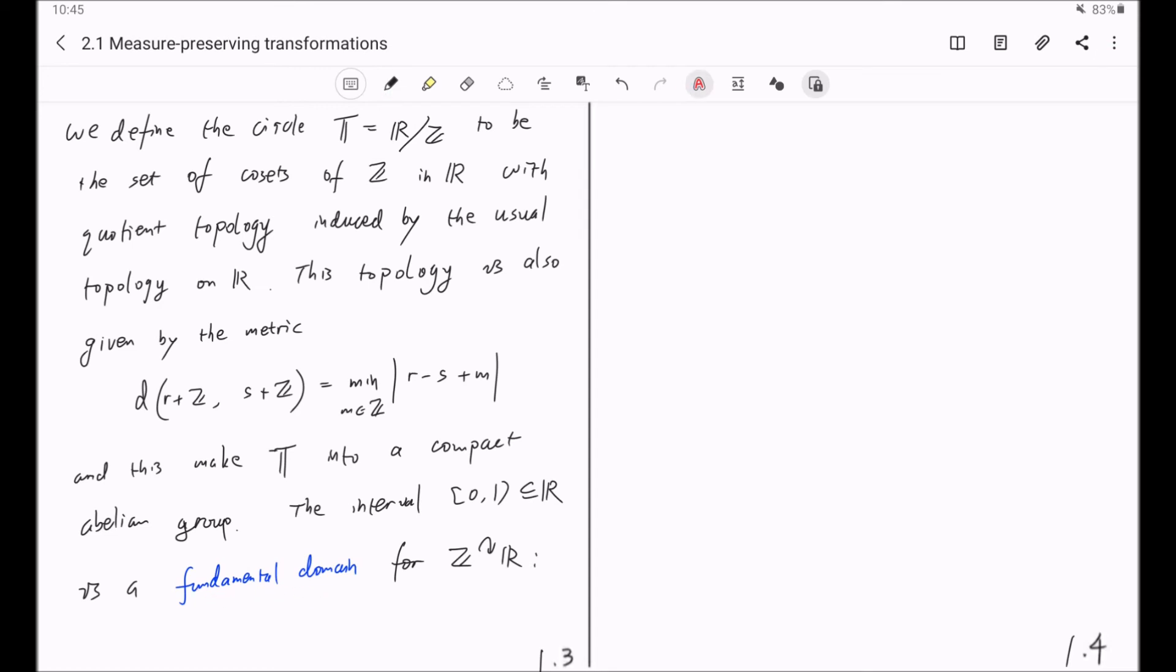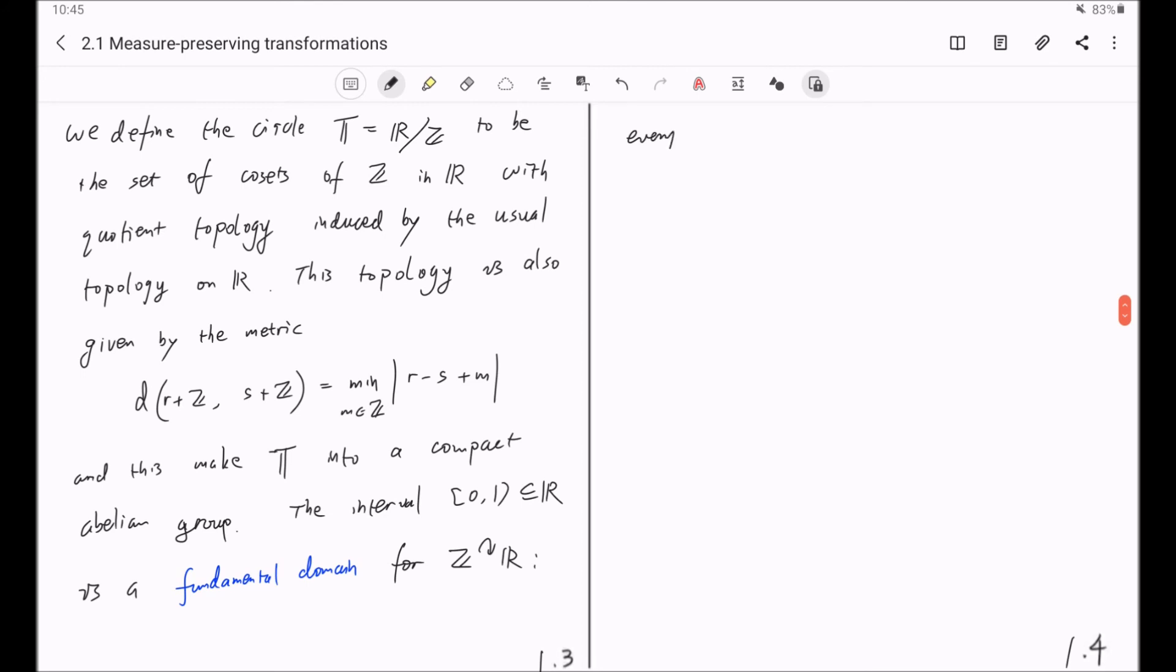And by fundamental domain, we mean every element of the circle T may be written in the form t + Z for a unique t in the interval [0, 1).